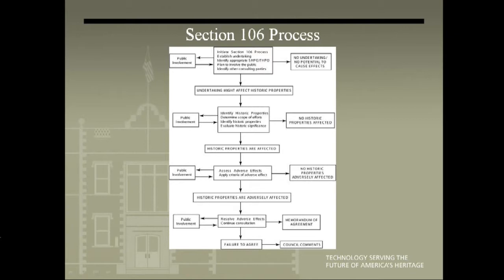Now we'll talk briefly about the Section 106 process. You initiate the process by establishing the undertaking, identify the appropriate SHPOs and TIBOs, plan to involve the public, and identify other consulting parties. The next step is to identify historic properties, determine the scope of the effort, and evaluate historic significance. After that, if historic properties are affected, you assess adverse effects by applying the criteria for adverse effects. Then you resolve adverse effects through an MOA, or if there is failure to agree, it goes to the Advisory Council on Historic Preservation for a recommendation.